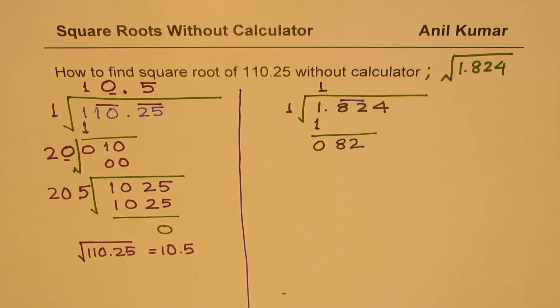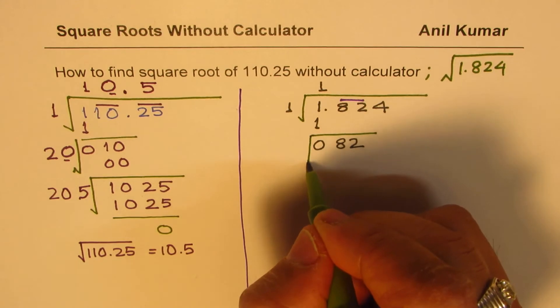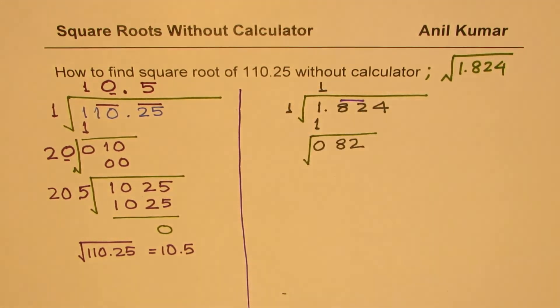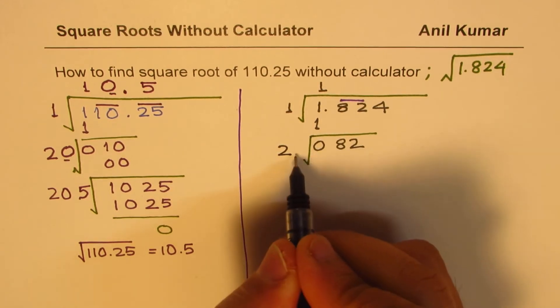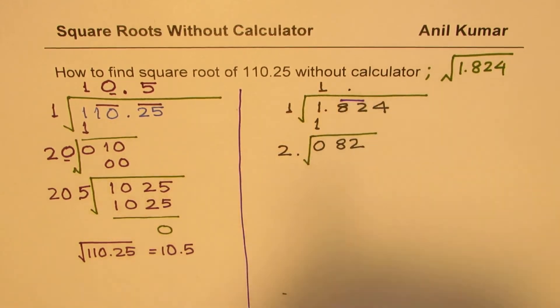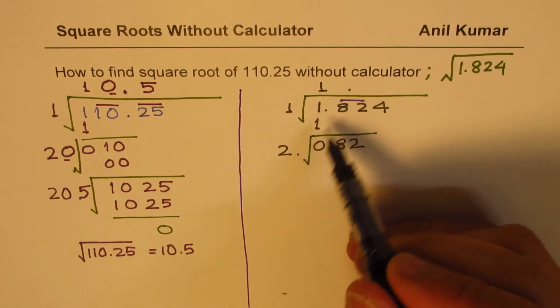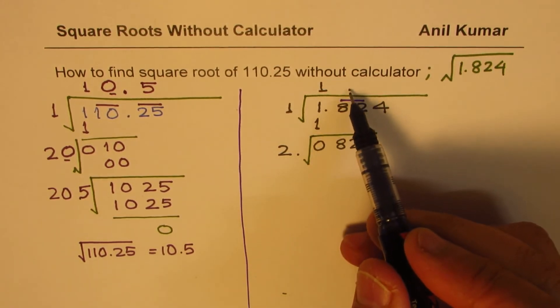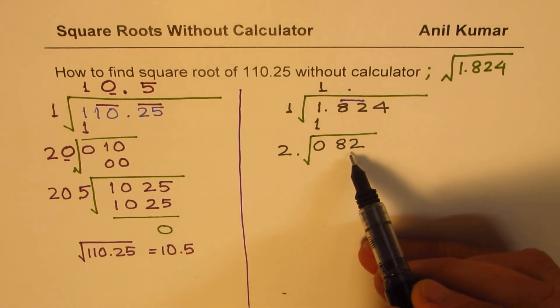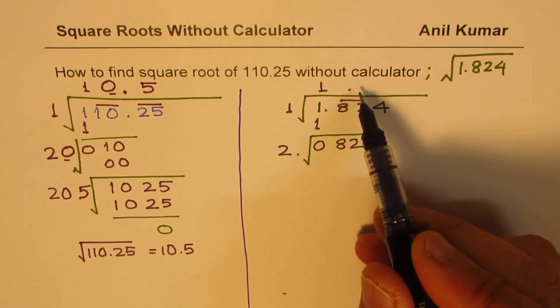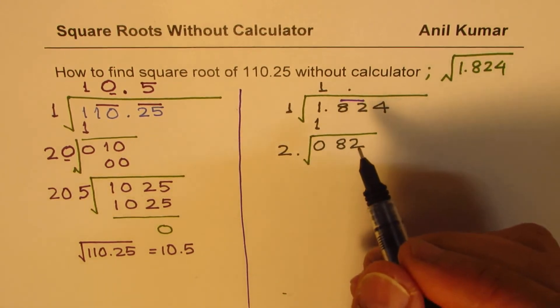The next number to divide with is twice this number. So double the quotient, it is 1, make it 2. And now we have to look for a number in these places. Same number should be placed. So if I place 2, for example, 2 times 2 is 4, we get 44. We could try 3 also. If I place 3, 3 times 2 is 6.